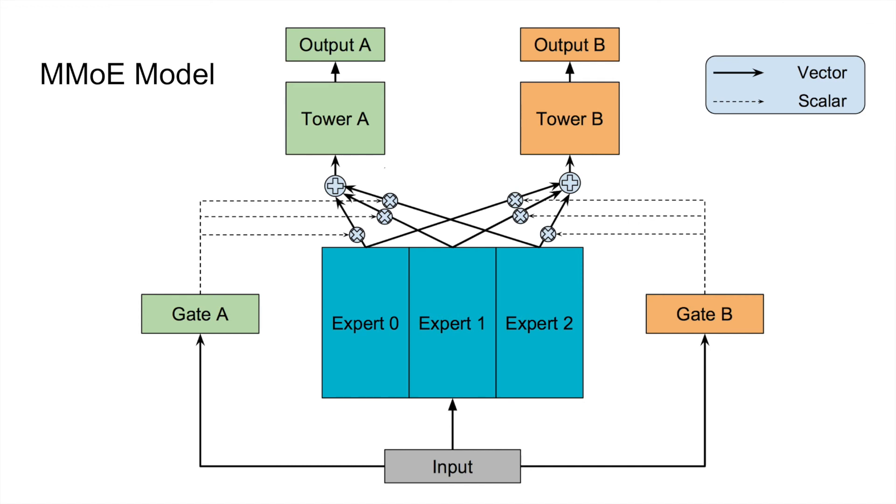Based on the MOE structure, the MMOE model implements two sets of gates which share one set of experts. Each task has its own gate, but all the tasks share a common set of experts. This means that the extent to share the experts can be explicitly adjusted by the gate, which aids the training of the shared bottom part of the model.